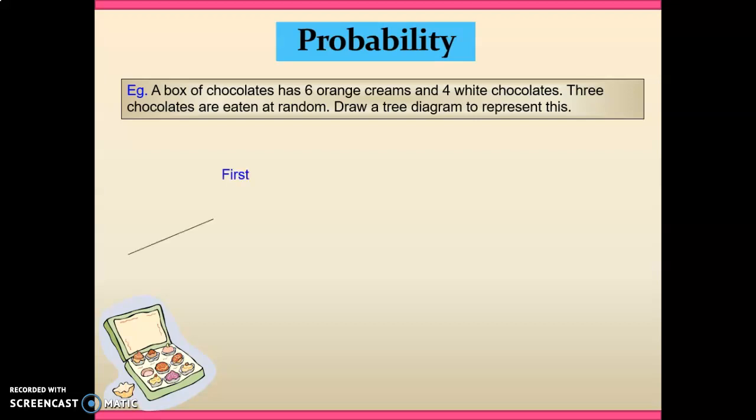So here's our potential. On our first choice, selection of chocolates, we've got orange creams or we've got white chocolates. O is going to depict the orange creams and W the white chocolates.